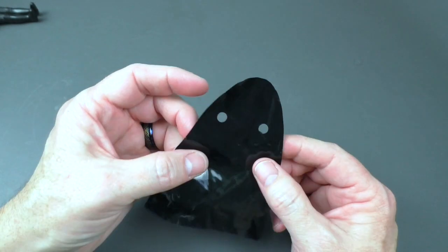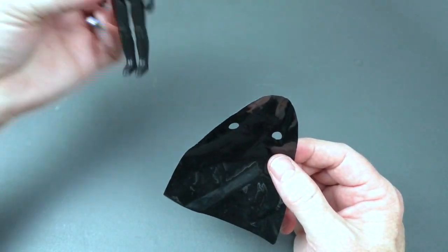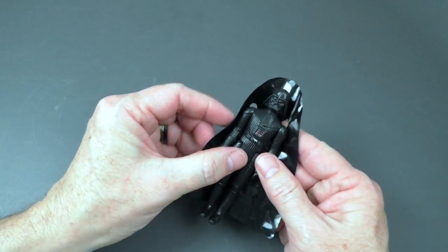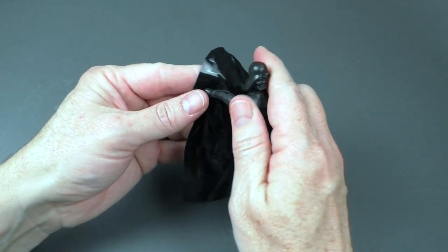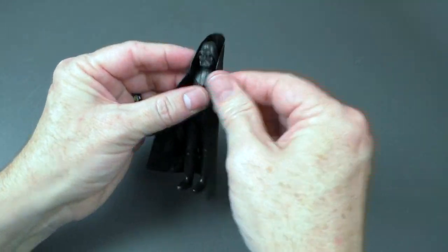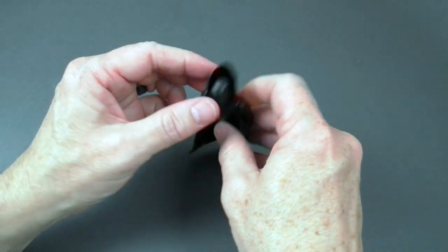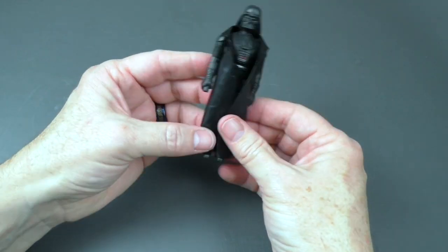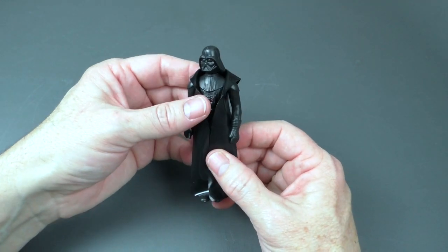Now I will put the cape on Darth Vader. I'm going to put the glossy part on the inside so it's a bit more obscured. All right. Fold this down. Wow. This looks great. But wait.